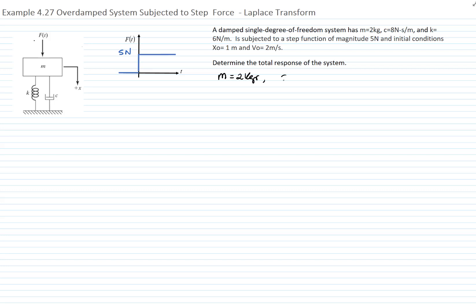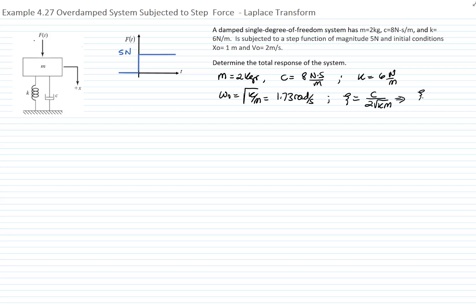We are given the mass, which is 2 kg, the damping constant, which is 8 Ns/m, and the spring constant, which is 6 N/m. Therefore, we can calculate the natural frequency of the system, which is 1.73 radians per second. We can also calculate the damping ratio zeta, which is c over 2 times the square root of km, giving a zeta value of 1.15.